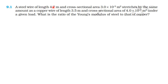A steel wire of length 4.7 meters and cross-sectional area 3×10⁻⁵ m² stretches by the same amount as a copper wire of length 3.5 meters and cross-sectional area 4×10⁻⁵ m² under a given load. What is the ratio of the Young's modulus of steel to that of copper?